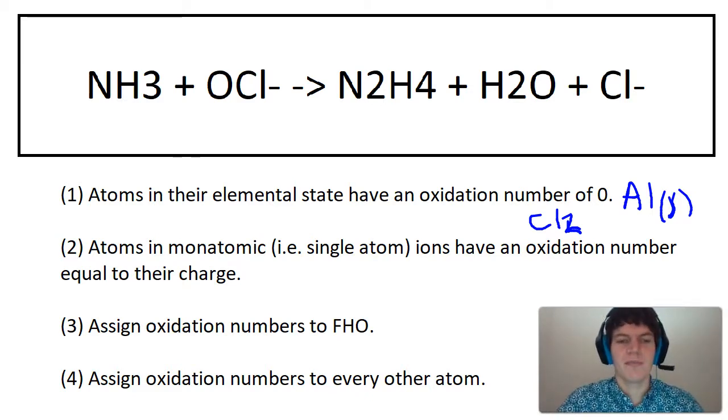Step two, atoms in monatomic, otherwise known as single atom ions, have an oxidation number equal to their charge. In this case, we're dealing with chloride ion over here, and overall its charge is minus one, so we're going to give an oxidation number to chloride of minus one.